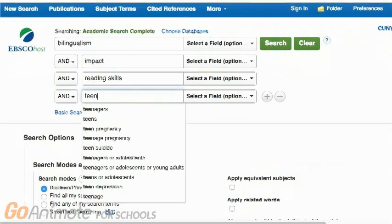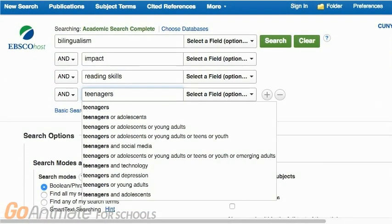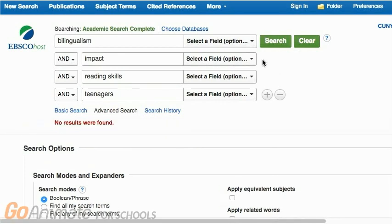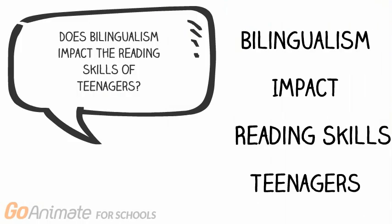But if we put that search into a library database like Academic Search Complete, we get zero results. We need to look again at our keywords. Have we broken our topic down into its most basic parts? What if we got rid of the word impact? We should still get articles about the reading skills of bilingual teenagers, so the keyword impact may not be necessary to get useful results.